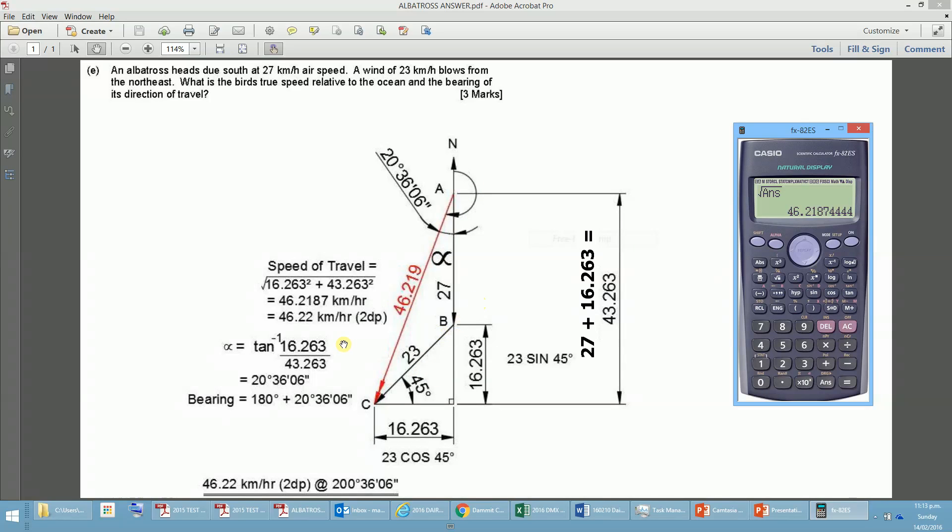but first we need to work out angle theta, and then we would add 180 to get the correct bearing. So angle theta is equal to tan to the negative 1, so shift tan to the negative 1, 16.263, divided by 43.263 equals,